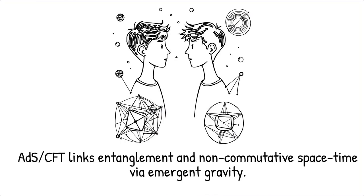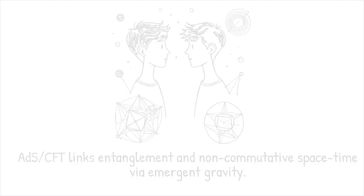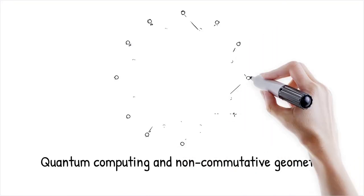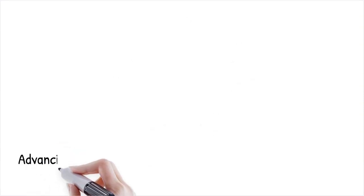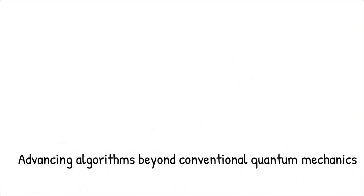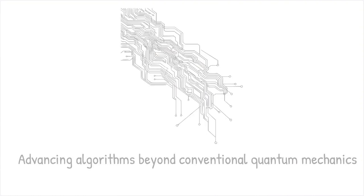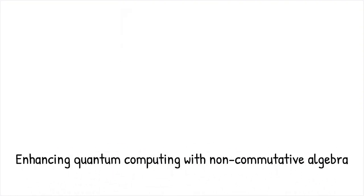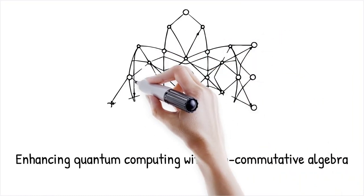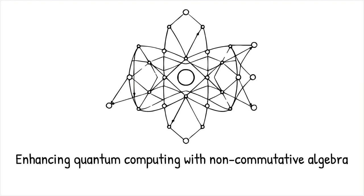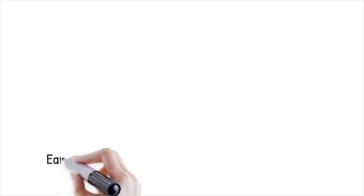Quantum computing relies on non-classical logic, and non-commutative geometry provides a potential framework for optimizing quantum circuits. By leveraging non-commutative structures, researchers may develop algorithms that process information in ways beyond conventional quantum mechanics. Certain topological quantum computing models explore the use of non-commutative algebra to enhance fault tolerance and computational efficiency. Like discovering a new way to organize data using a non-linear filing system, non-commutative logic could unlock novel ways to manipulate quantum information.